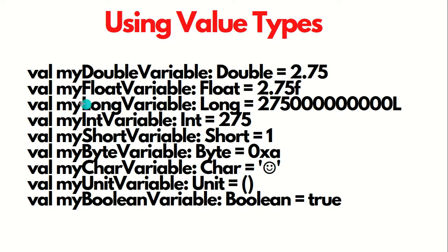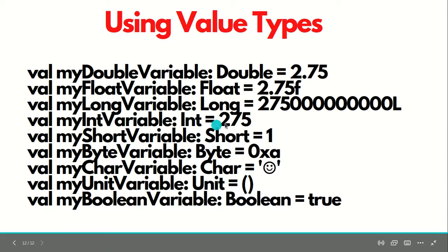At the end of this video, let's see the different value types and how we can use them. First, we have used VAL — which we already talked about in previous videos as an immutable declaration. Then we have the variable name, for example, myDoubleVariable, followed by a colon and the data type, which is Double, equal to 2.75. In the same way, we use the other eight: Float, Long, Integer, Short, Byte, Char, Unit — which is analogous to void in Java and means returning nothing — and Boolean.